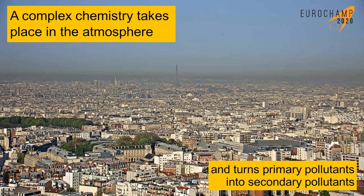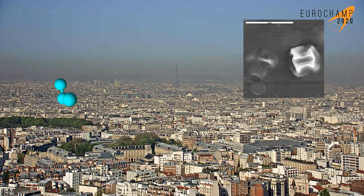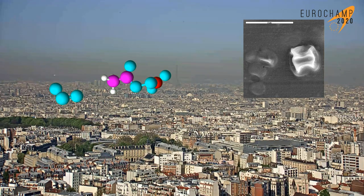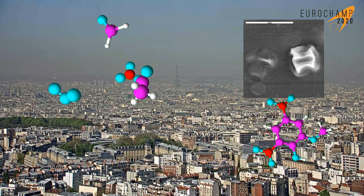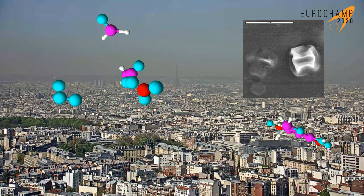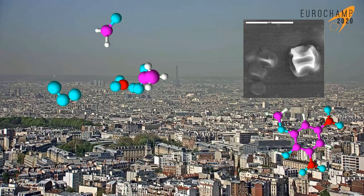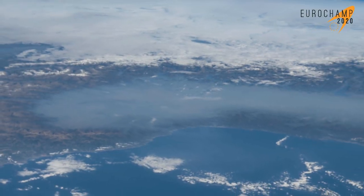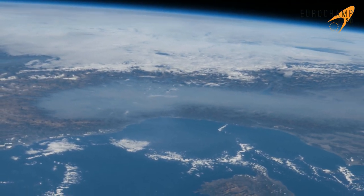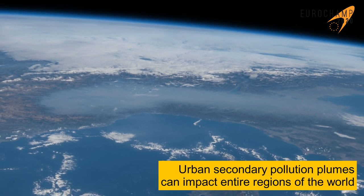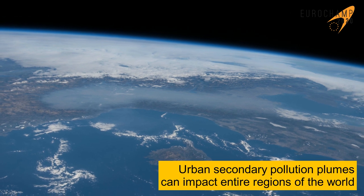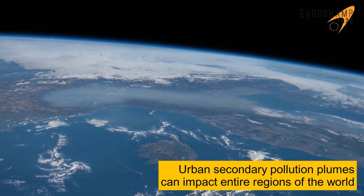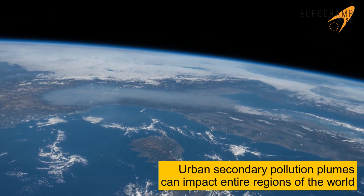Among secondary pollutants, famous compounds such as ozone or fine particulate matter are formed, as well as more complex compounds such as peroxyacetyl nitrate, which is toxic for plants, formaldehyde, and nitroaromatic compounds that are carcinogenic. Because it takes several hours or days to develop these secondary pollutants, plumes can cover areas of thousands of square kilometers. While the air pollution precursors are locally emitted, they can have effects at very large scales and can be detected even from space.